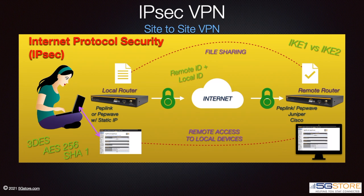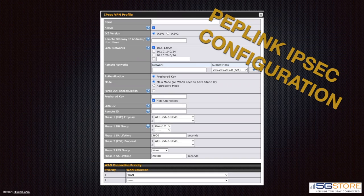Here's a preview of each site-to-site VPN. IPSec is up first. Site-to-site connections are typically made for sharing access to devices and files across each network. IPSec is a common VPN protocol used by several router manufacturers. On your Peplink or Pepwave router, IPSec can be used to connect to another Peplink or Pepwave router, as well as Cisco and Juniper routers.